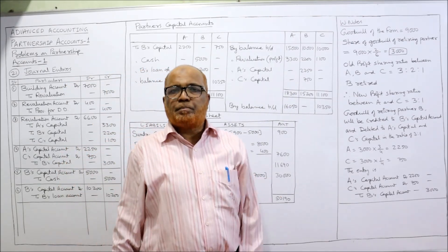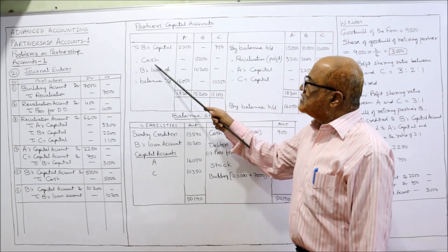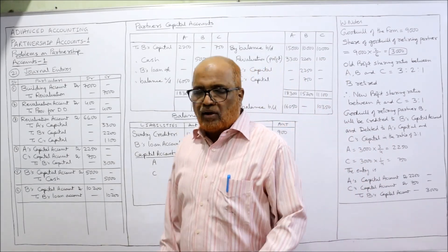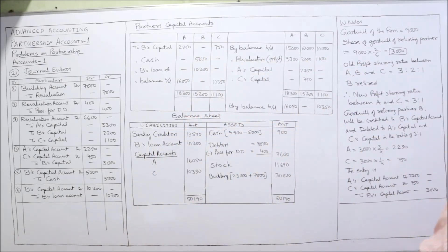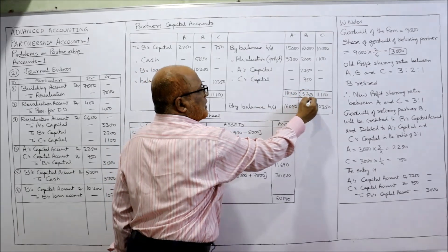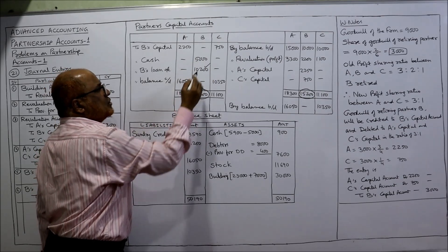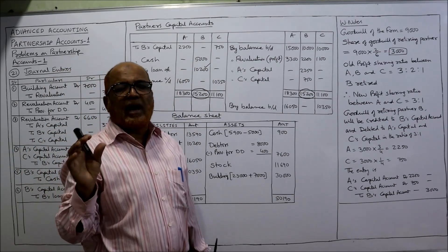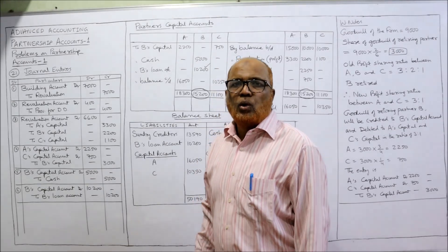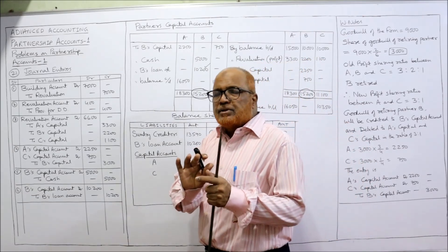Cash of 5,000 is paid to B: debit side of B's capital account, to cash 5,000. Now we find the balance due to retiring partner B. Total on the credit side of B is 15,200. From 15,200 minus 5,000 = 10,200. This 10,200 is the balance amount due to the retiring partner and will be transferred to B's loan account. So to B's loan account 10,200. B's capital account is now closed — B is no longer a partner.